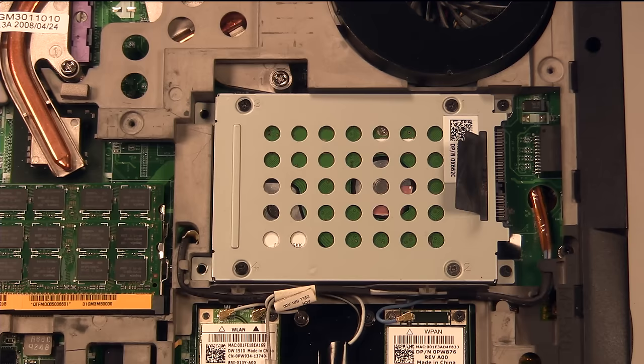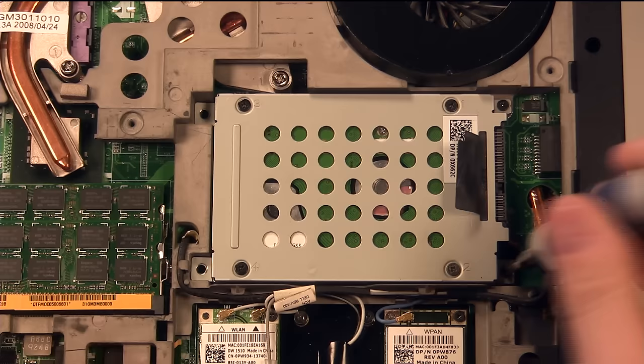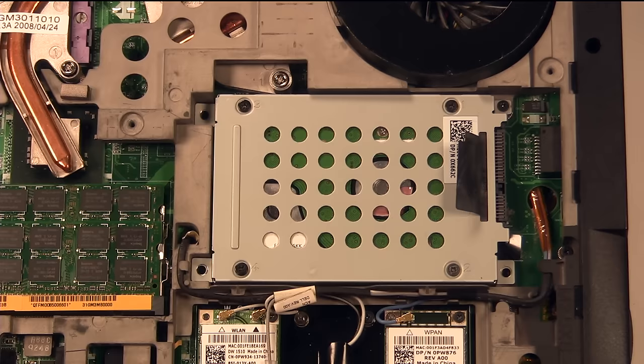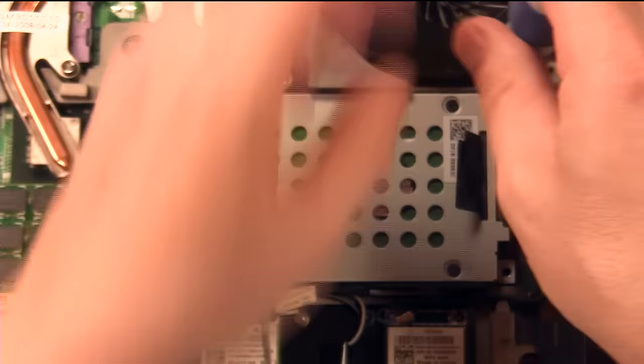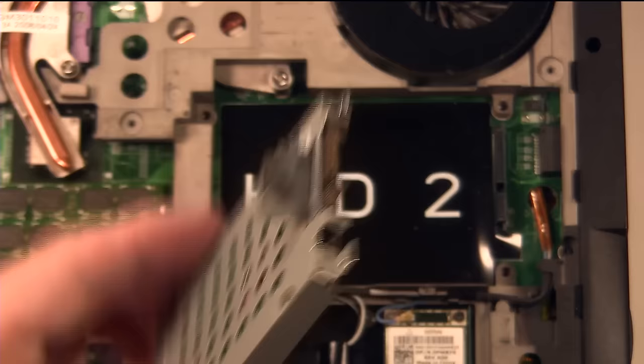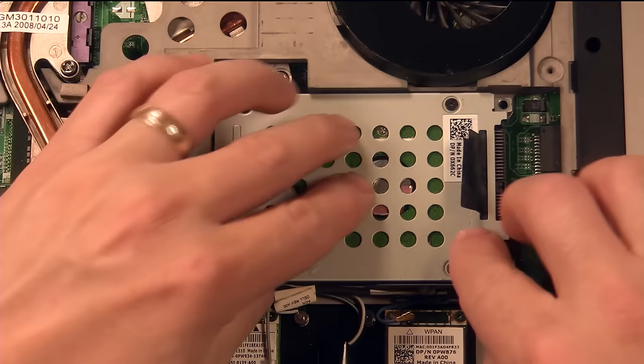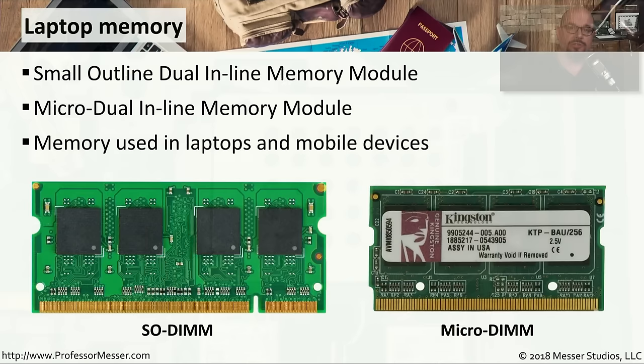These storage devices in laptops are designed to be relatively easy to replace. This one requires you to remove a couple of screws and then it pops out. We'll remove the first screw, then the second screw, and you would simply lift up and remove the drive from the laptop. To replace the drive, you simply reverse the process — push it into place, add the screws, and now your laptop drive is back in place.